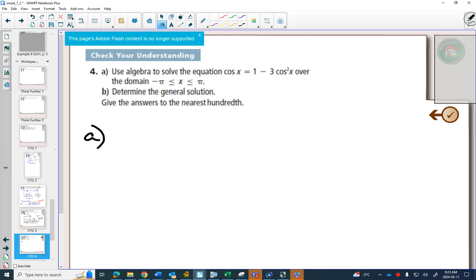Alright, so we're solving the equation in radians. This time I have a cos²x and I have a cosx, so I'm going to think about factoring. I'm going to move everything over to one side.